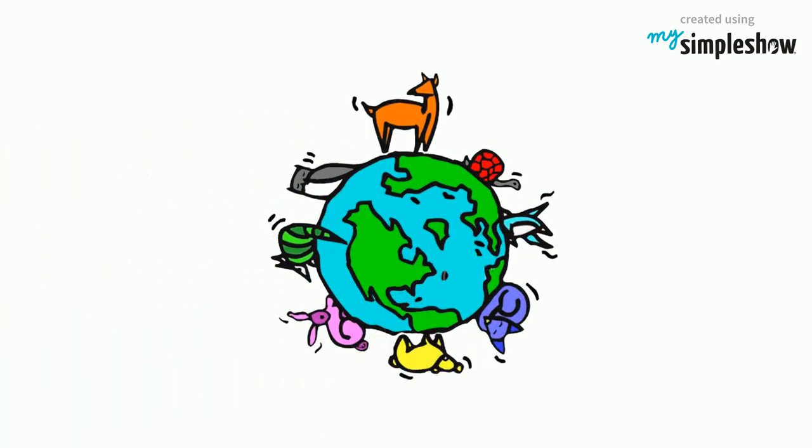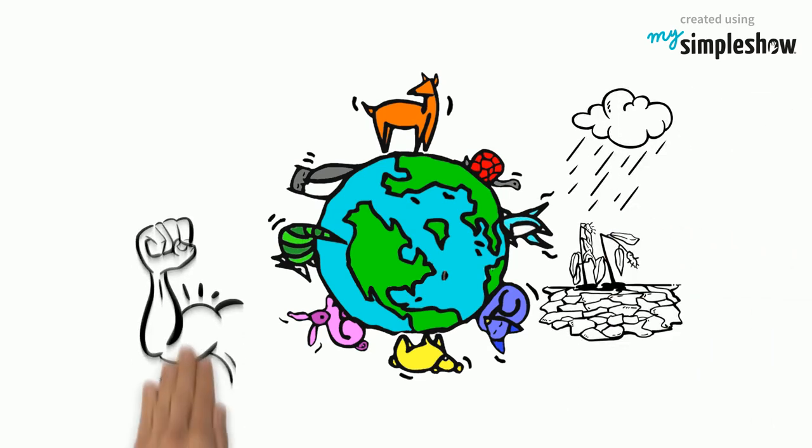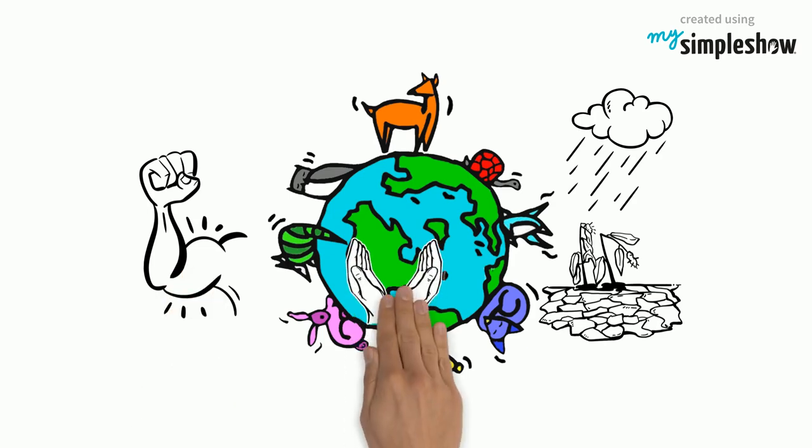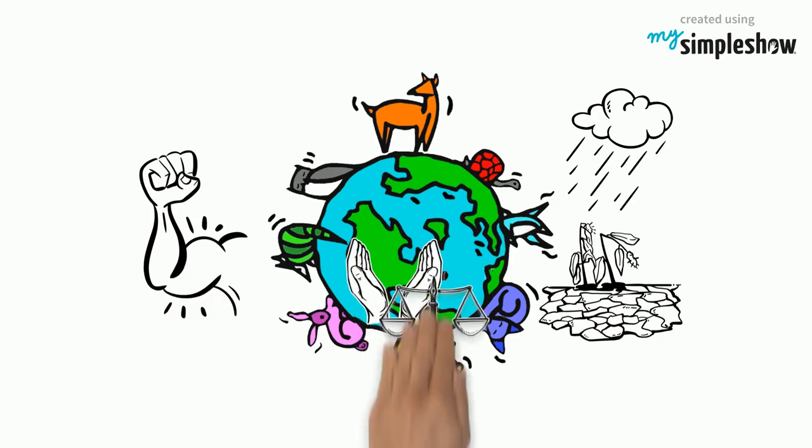Our planet's ecosystems have been here longer than us. These plants and animals may not be able to protect themselves against the effects of climate change, but we can. It's up to us to preserve these natural wonders and maintain the balance on earth.